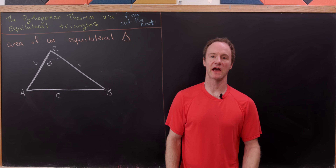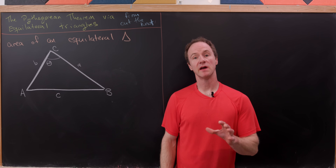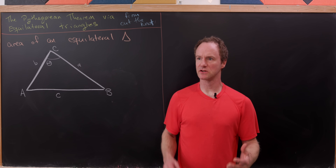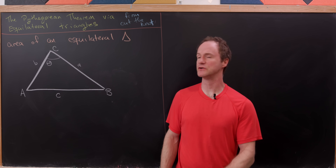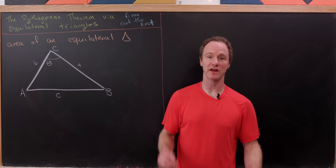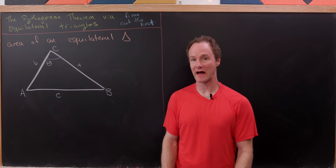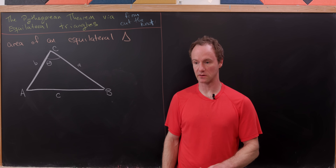There are many proofs of the Pythagorean theorem, and today I'd like to look at one that involves using the area of an equilateral triangle.